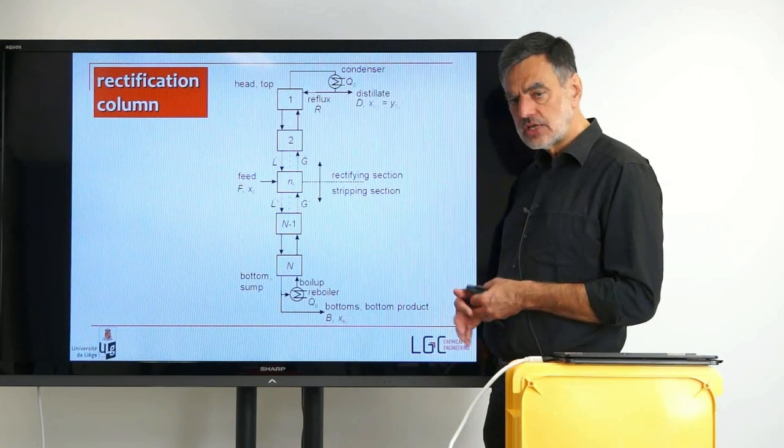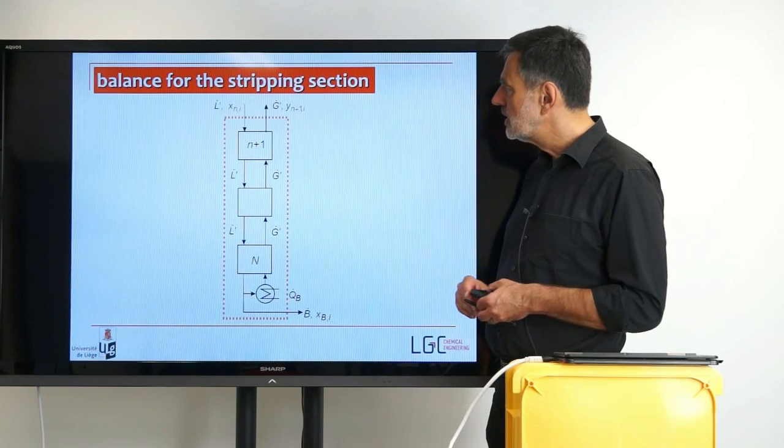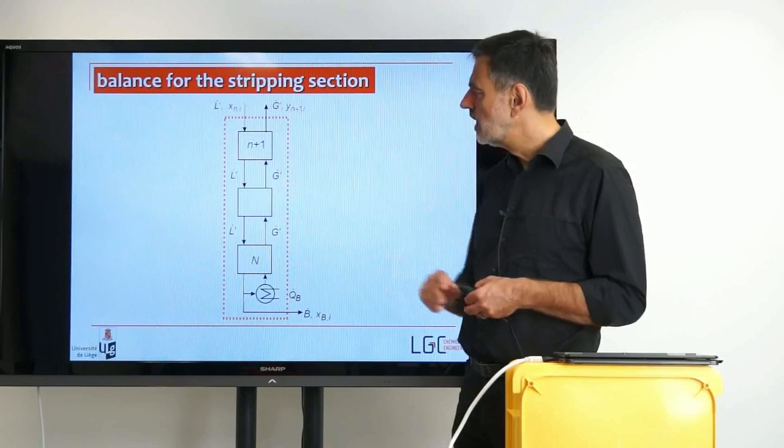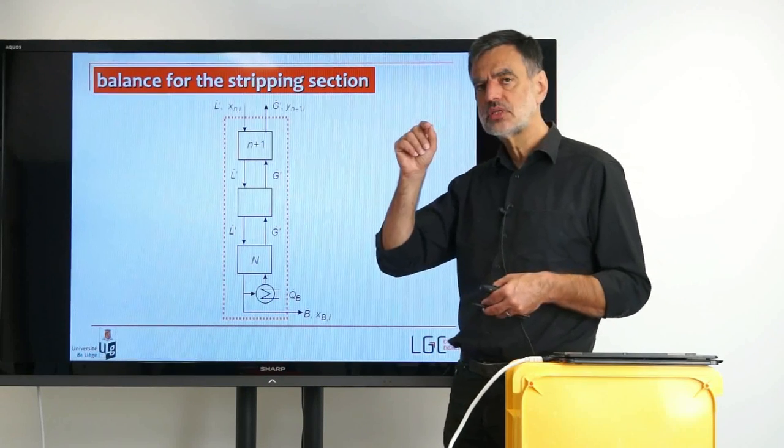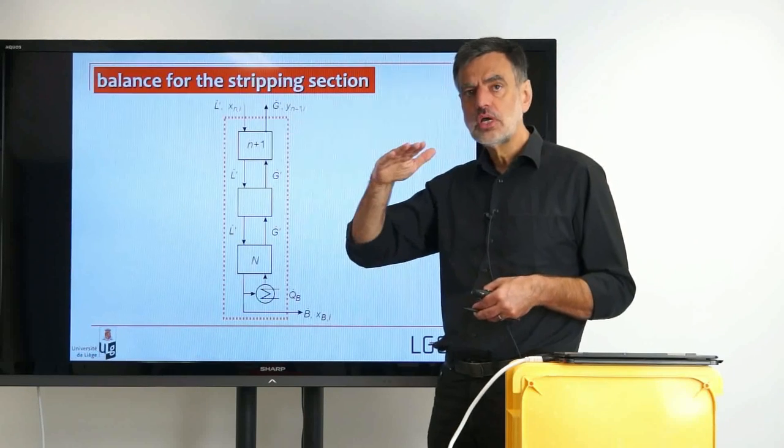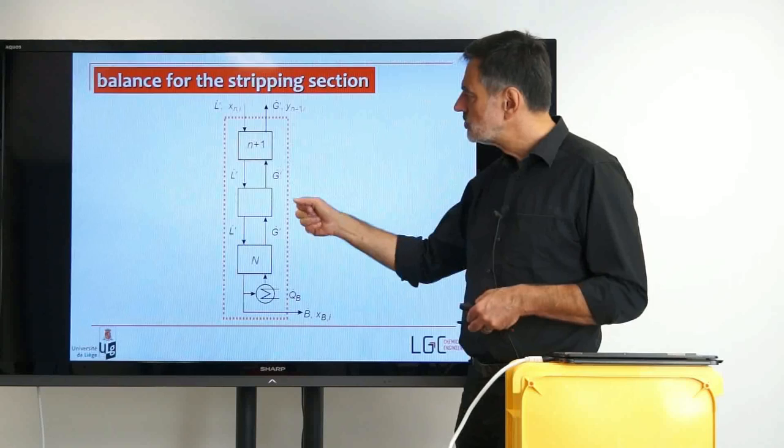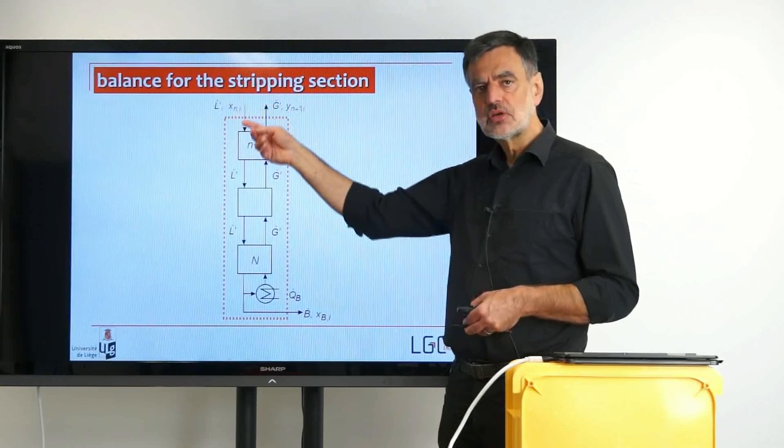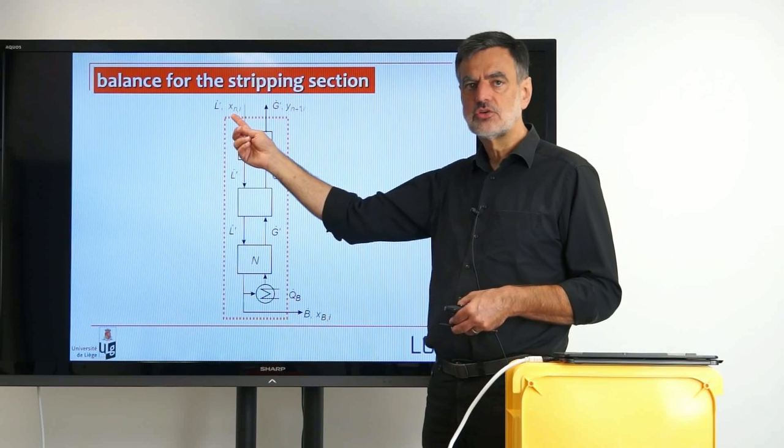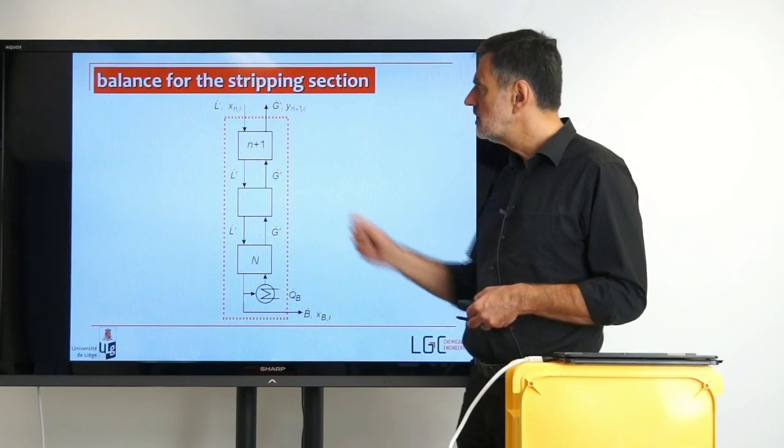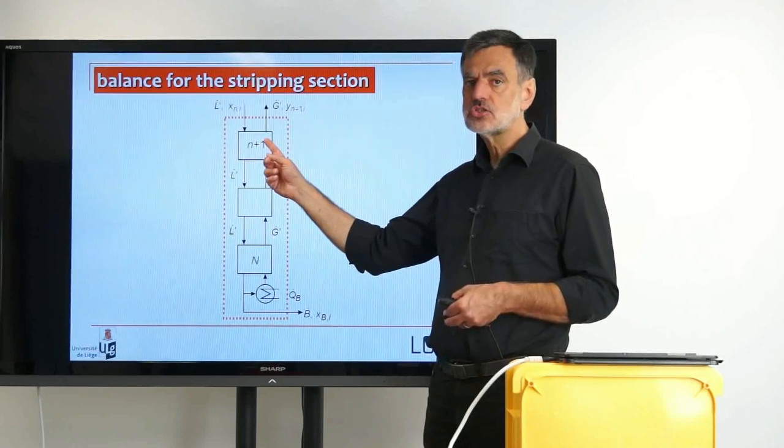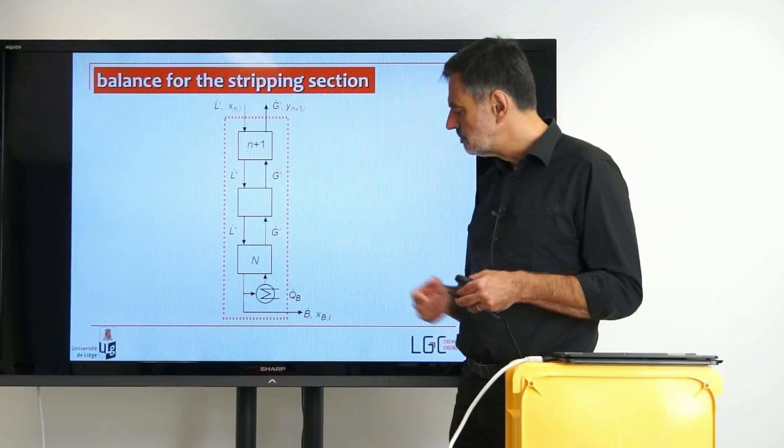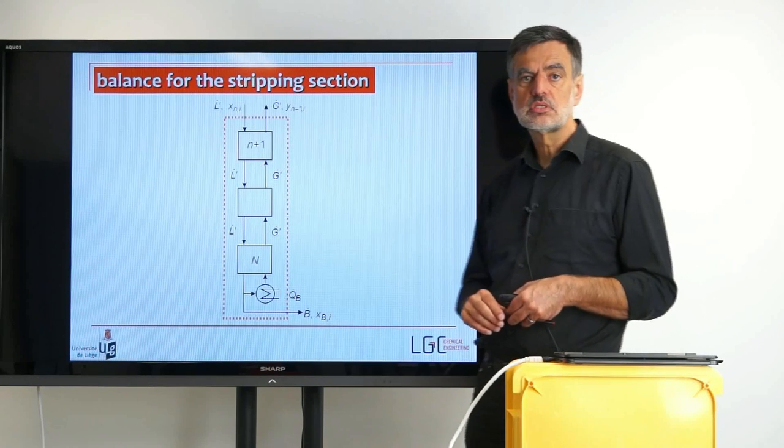If we look at the section separately, the stripping section, we define a control volume. Same as before, now we have the index n plus 1 here, so we are cutting below stage number n, so that the next stage is n plus 1. The composition of the liquid entering is coming from above, from stage number n, so we write X_Ni. The vapor flow rate leaving is carrying the index of the stage it's leaving, which is Y_N+1,i.